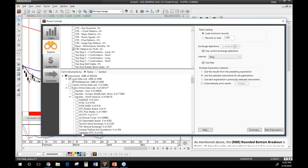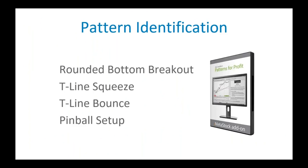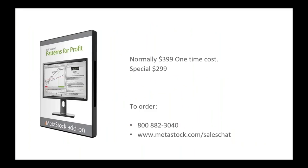Rick's add-on is a one-time cost of $399. If you want to try it, we'll give it to you on a money-back guarantee. The webinar special today is $299. Call 1-800-882-3040 to talk to one of our sales people, or you can chat online at metastock.com/saleschat if you're international. Rick has been doing very well with these patterns this year — and rounded bottom breakout is his favorite pattern.